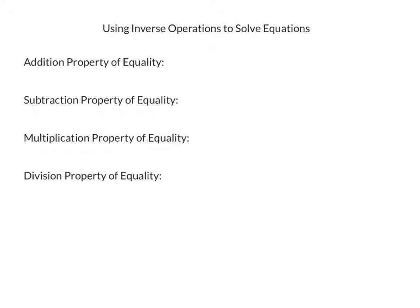The addition property of equality states that if one quantity equals another, so algebraically we write if A equals B, then adding the same quantity to both sides keeps the equation balanced or equal. In this case, we're representing that by adding C to both sides.